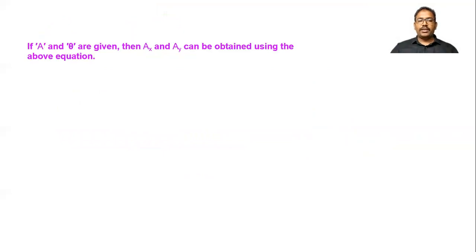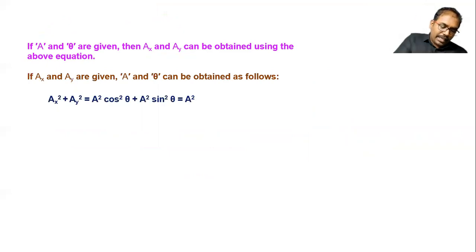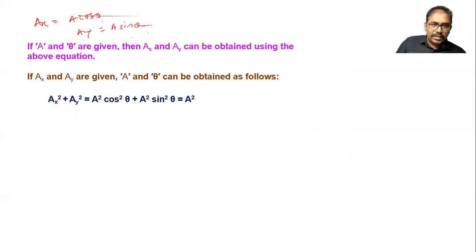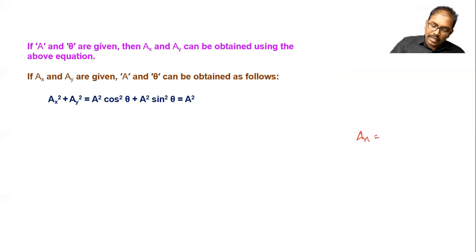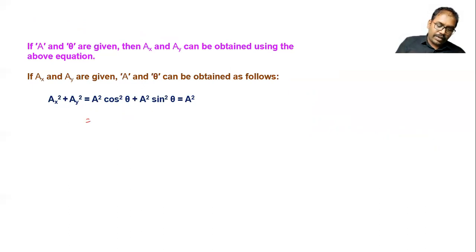If a and θ are given, then ax and ay can be obtained using ax equals a·cosθ and ay equals a·sinθ. By squaring and adding these two equations, we get ax² + ay² equals a²·(sin²θ + cos²θ), and since sin²θ + cos²θ equals 1, we get a² equals ax² + ay².